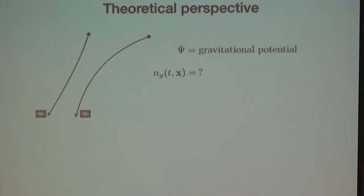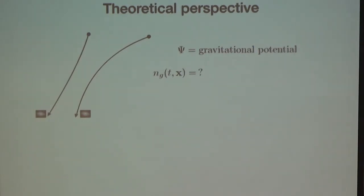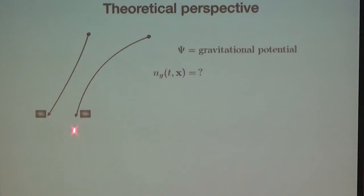I want to take a more analytic perspective and describe more rigorously what we do in galaxy clustering. I want to understand how the number density of galaxies at a certain coordinate time and position depends on the fundamental physics. I'm sketching the following: I take two galaxies — measuring pairs — and think about what causes the separation between them.